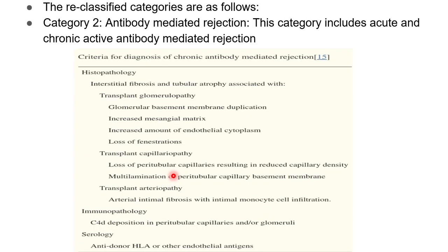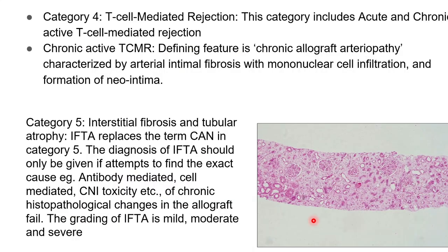Category two, antibody mediated rejection, was reclassified as acute active, chronic active, and chronic inactive types, while the other three main categories remained the same. There were a few minor updates you can review in the table, and a few updates with respect to category four and category five.